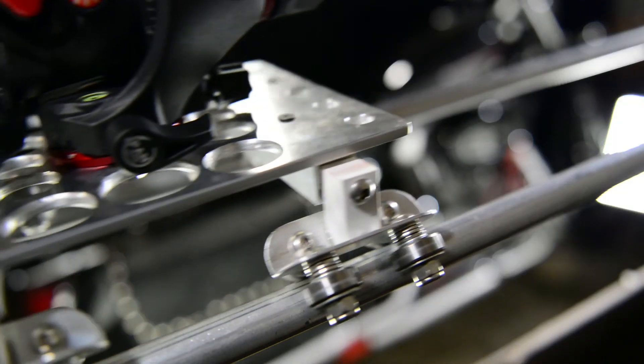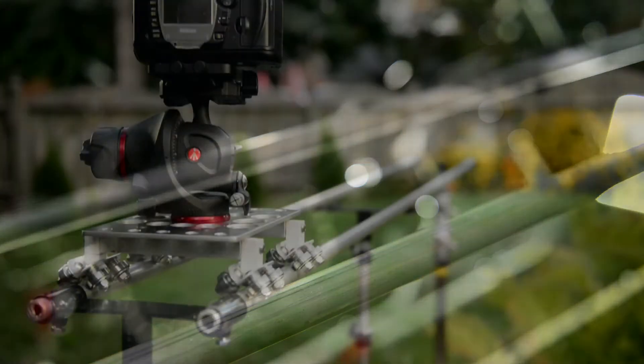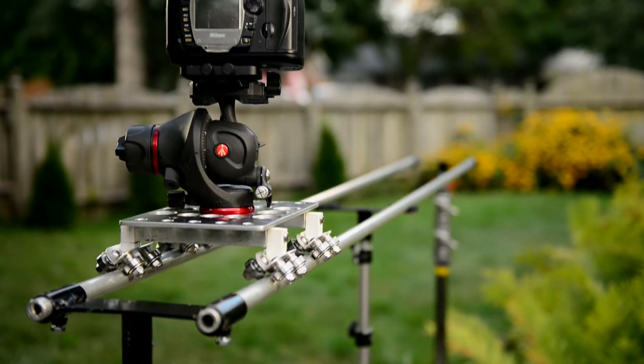For the rails, I used 3/4 inch diameter aluminum tubing, cut to six foot lengths, but larger tubing could be used. Plus, you can make them whatever length you need.